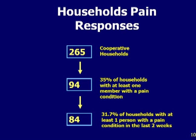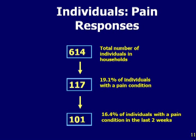Those 265 households accounted for 614 individuals. When the household was the unit of analysis, 94 of the 265, or 35%, had at least one member with a pain condition, and 84, or 32%, had one person with a pain condition in the past two weeks. When the individual was the unit of analysis, 19% had a pain condition and 16% had a pain condition within the last two weeks.